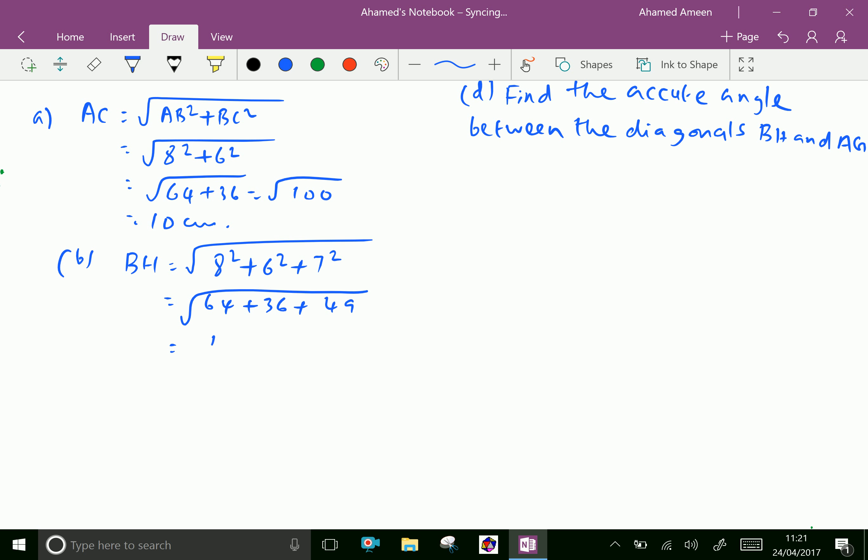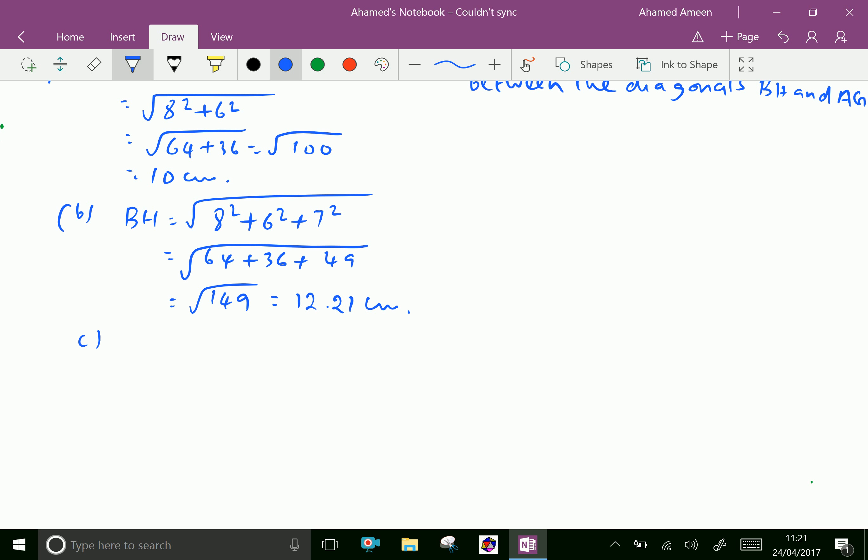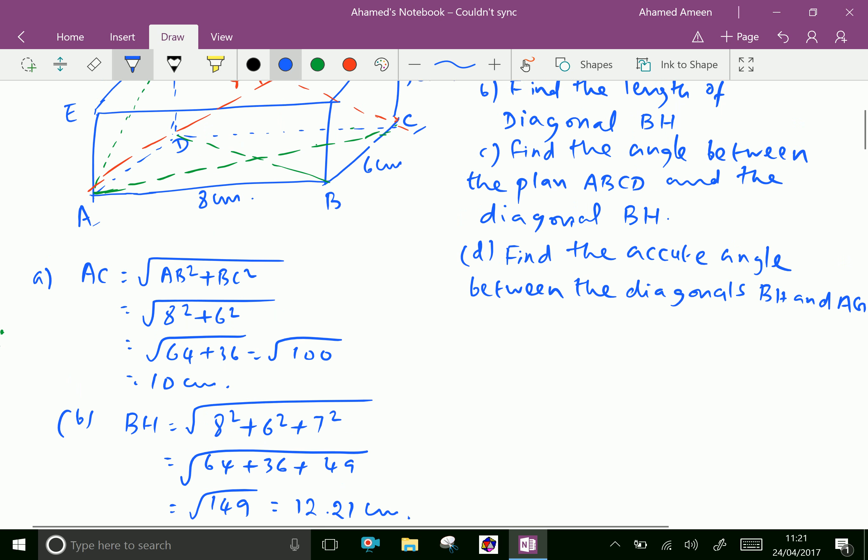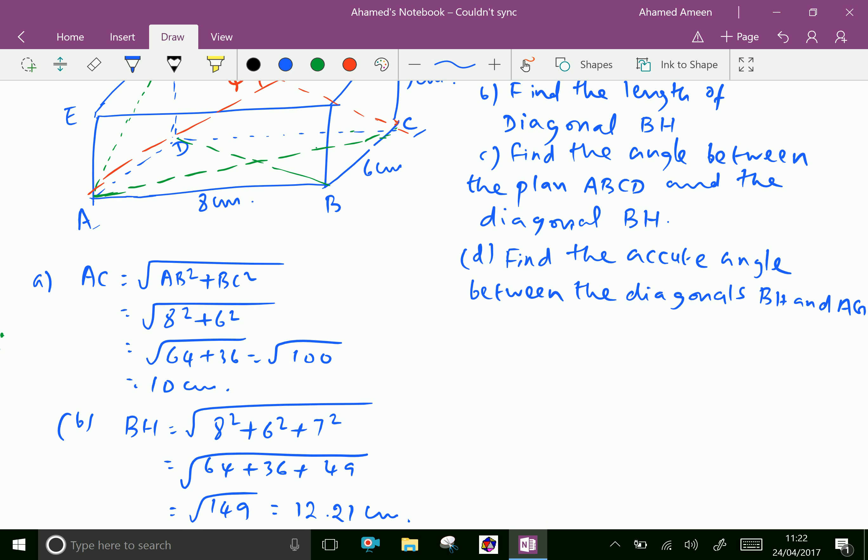Here, square root of 149, which is approximately equal to 12.21 centimeters. Now question number c: find the angle between the plane ABCD and the diagonal BH.